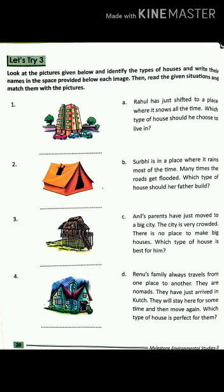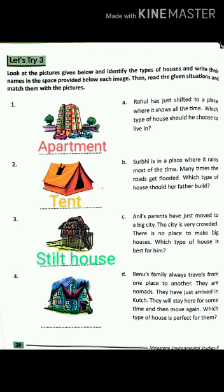Come to page number 20 — Let's Try Three. Look at the pictures given below, identify the types of houses, and write their names in the space provided below each image. Then read the given situations and match them with the pictures. Those who have read the chapter carefully will find it easy to identify these pictures. The answers are: first — apartment, second — tent, third — stilt house, and fourth — cottage.